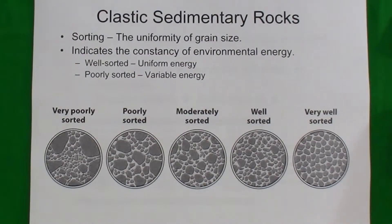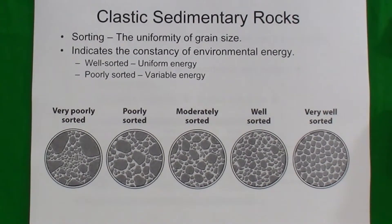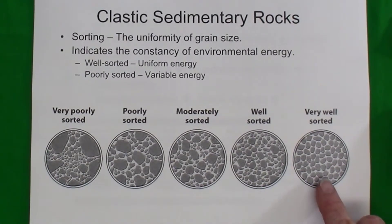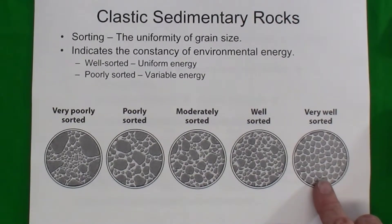Another characteristic we assess when identifying clastic rocks is the sorting of the sediment grains. If a sample is well sorted, the size of the sediment clasts is pretty uniform — so all medium sand size, all silt size, or all pebble size.